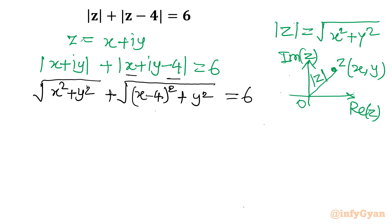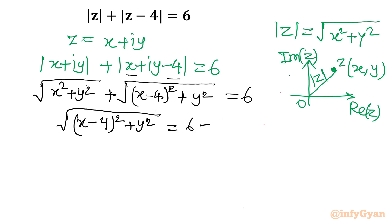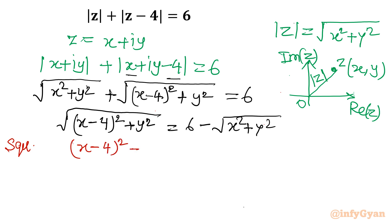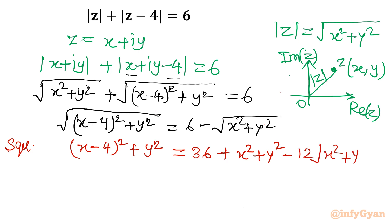Now I will take square root of x squared plus y squared to the right side. So it becomes: x minus 4 whole squared plus y squared equal to 6 minus square root of x squared plus y squared. Now let's square both sides. On the left side we get x minus 4 whole squared plus y squared, and on the right side we get 36 plus x squared plus y squared minus 12 times square root of x squared plus y squared.